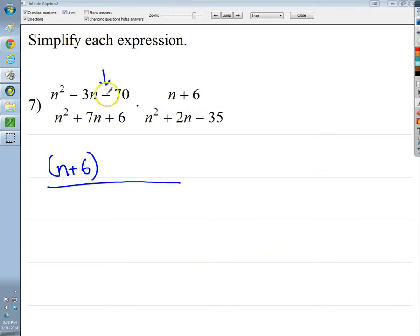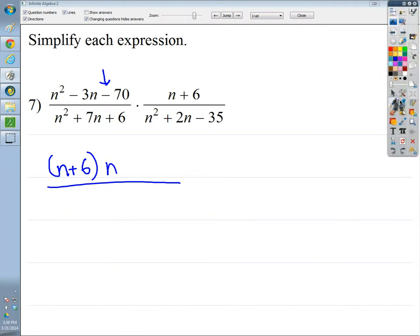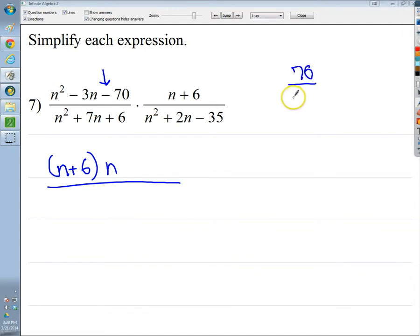Then I'm going to factor this. It's negative, so I need to, the factors are going to be different. So I need to do a factor list for 70. That gives me negative 3. And I know that 10 and 7 make 70, so I want it to be negative 3. So it'll be negative 10 plus 7.